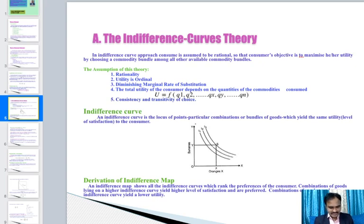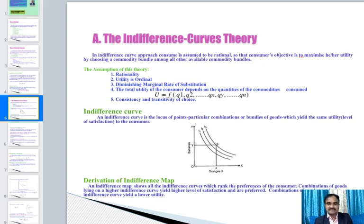The assumptions of indifference curve theory are: rationality, ordinal utility, diminishing marginal rate of substitution, total utility depending on quantities consumed, consistency, and transitivity of choices. Rationality means the consumer aims at maximization of utility. Utility is ordinal — this is the most important assumption — meaning the consumer can rank preferences according to satisfaction. Only ordinal measurement is required.